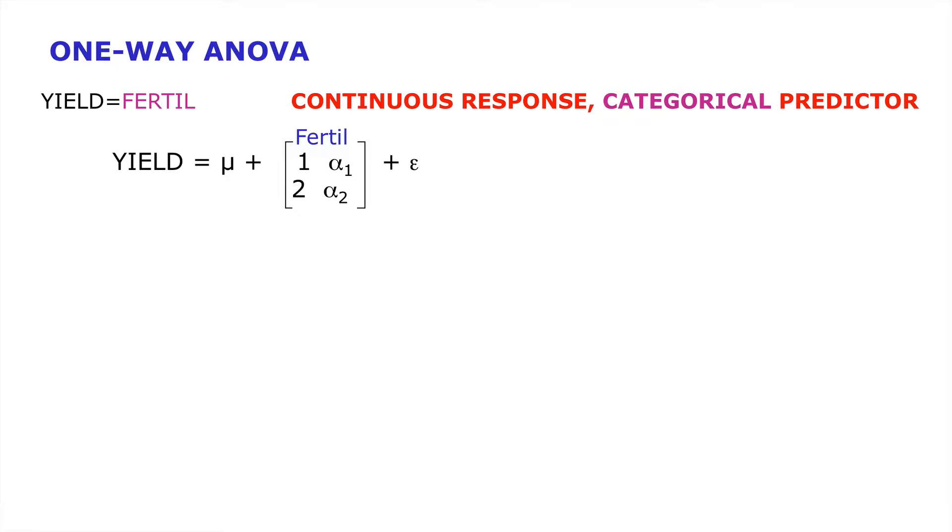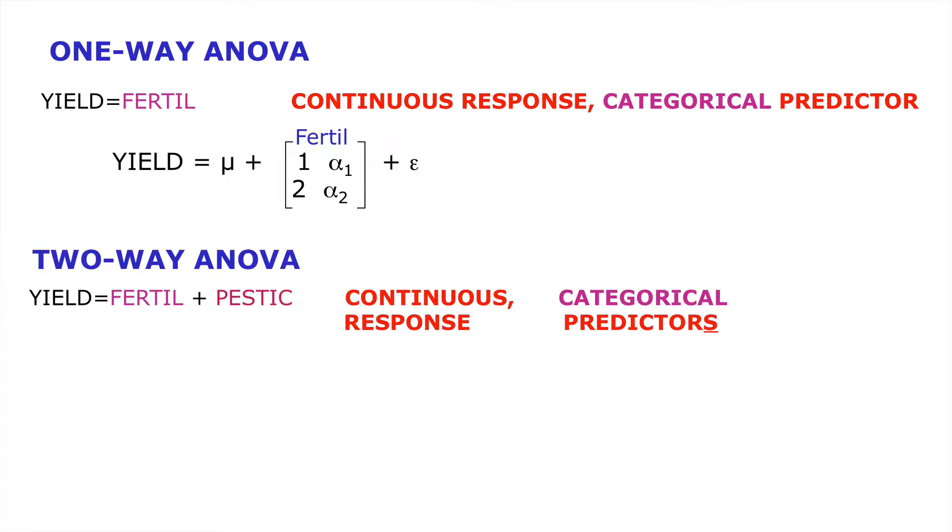Well we can expand this approach of analysis of variance to looking at not just one type of factor but two or more types of factor. Here for example is the two-way analysis of variance in the case of a continuous response yield. And in this case we have two broad types of categorical predictor. We have the type of fertiliser applied and we have the type of pesticide applied too.